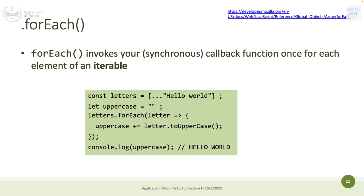Functional methods work on arrays. forEach is a method that invokes a synchronous callback once for each element of an iterable. They work on arrays but actually work on everything that is iterable. For instance, you can take a string, spread it into an array so each position has one letter, and then use forEach on each letter.